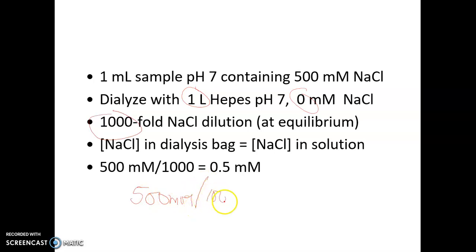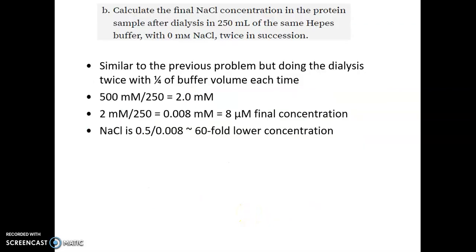So the answer is 500 millimolar divided by 1000, which gives us 0.5 millimolar. That means we have 0.5 millimolar sodium chloride at equilibrium after the first dialysis.